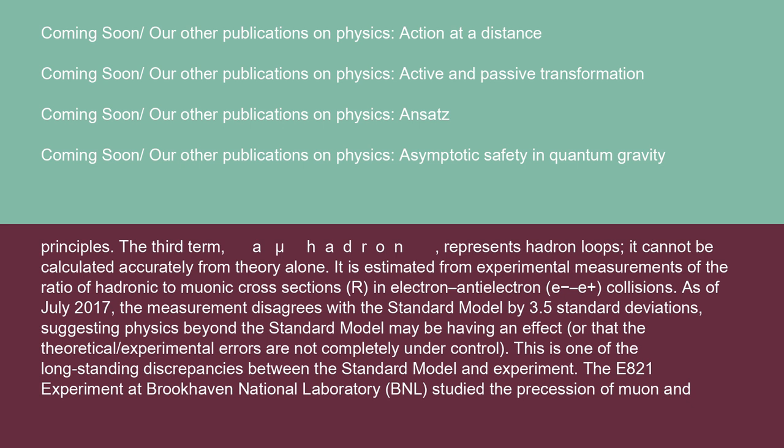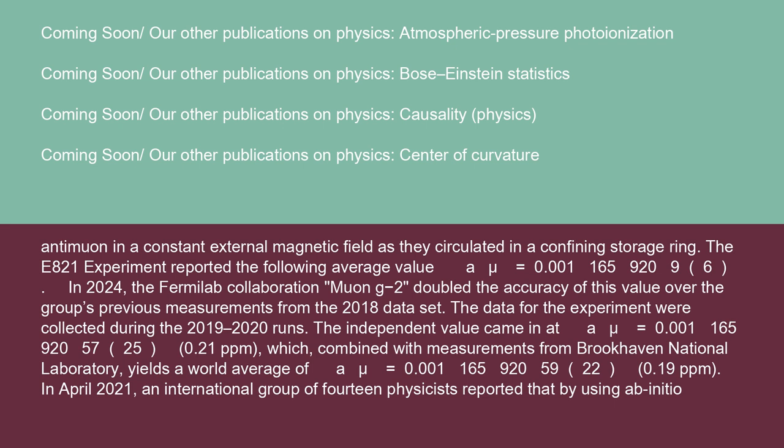The E821 experiment at Brookhaven National Laboratory (BNL) studied the precession of muon and antimuon in a constant external magnetic field as they circulated in a confining storage ring. The E821 experiment reported the following average value: a_μ equals 0.00116592096.